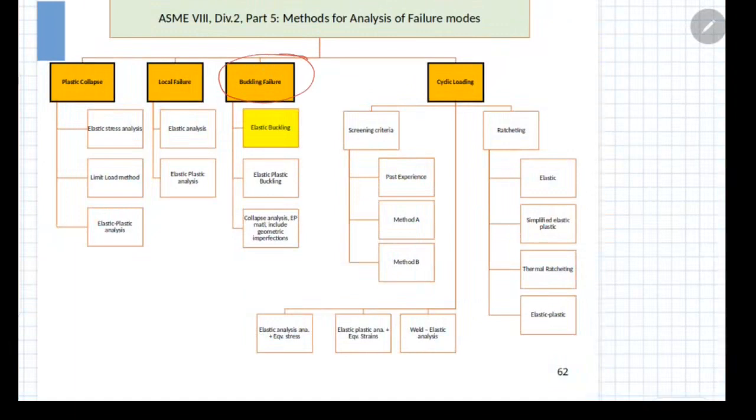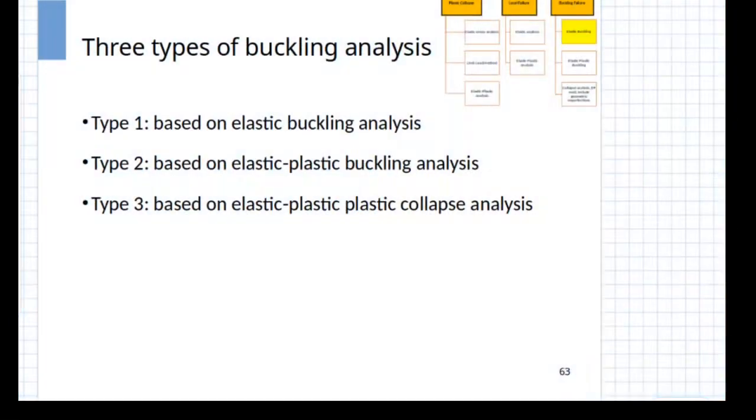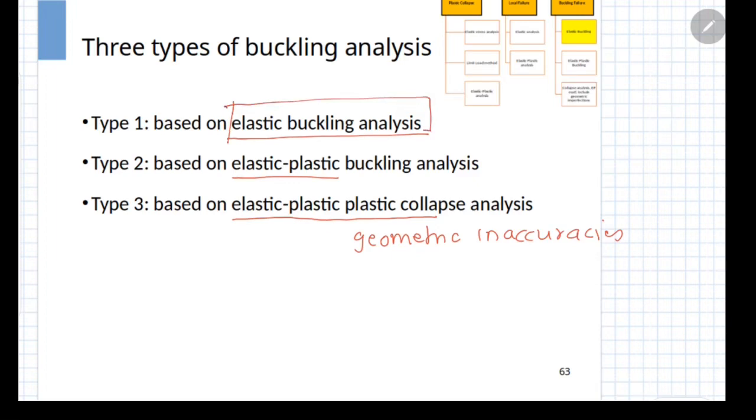The buckling analysis can be performed using three alternative approaches. The first one is elastic buckling, the second is elastic plastic, and the last one is a particular variation of elastic plastic analysis known as collapse analysis. The elastic buckling analysis uses the perfectly elastic material model. Elastic plastic uses the elastic plastic model and the last one in addition to elastic plastic model considers the geometric inaccuracies which can exist in the model. In this section, we will be covering the elastic buckling analysis.